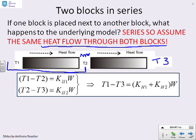So if I look at this first block, I've got a temperature difference T1 minus T2, so I can write T1 minus T2 equals KH1 times W, where W is the heat flow through that block. For the second block, I can write T2 minus T3 equals KH2 times W.